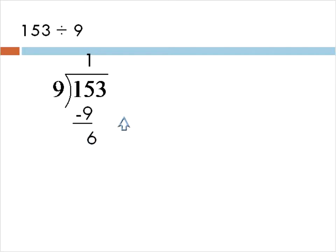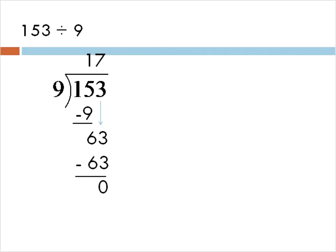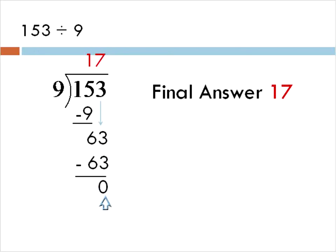To find out the rest of this problem, what we need to do is bring the 3 down and figure out again: how many times does 9 go into 63? Well, 9 goes into 63 seven times. Seven times 9 is 63. So when we find the difference, there's nothing left over — and that's actually a good thing, that means it's nice and even. 153 divided by 9 is 17. Whenever it works out to a 0, there are no remaining parts left over, and we're done.